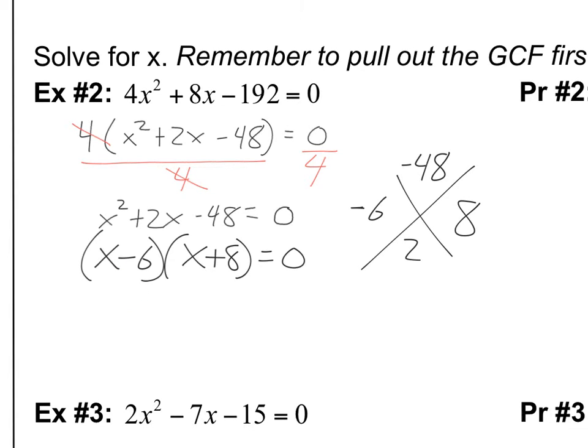And I can solve each of these, set them each equal to 0 and solve, or I can just see these, it's going to be the opposite of those factors there. So my solutions are going to be 6 and negative 8.